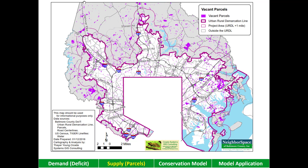The purple spots and blotches on this map represent parcels that are vacant — that is, without structures. While hard to see at this large scale, there are still a lot of vacant parcels inside the ERDL. This is where we started our mapping work.